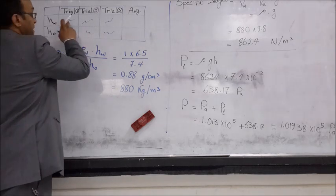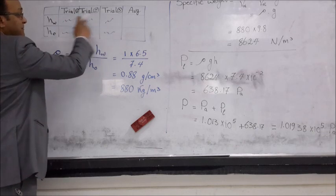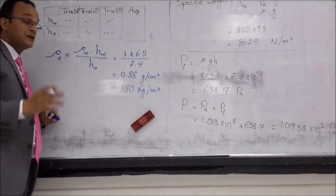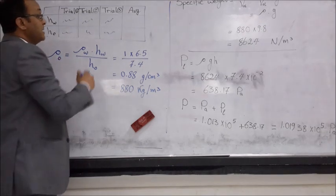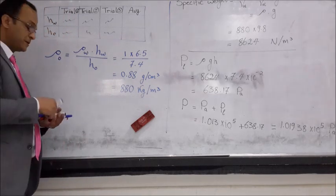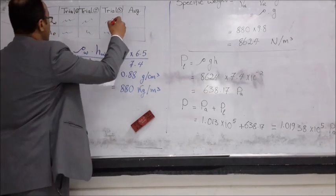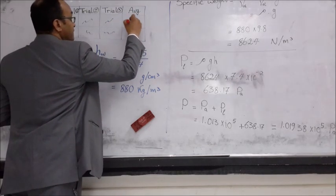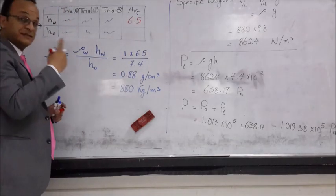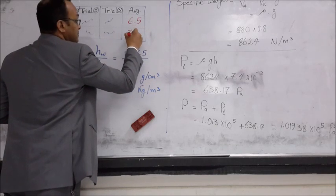We will get the average by calculating or finding the summation of these readings and divide by their numbers. Here are three trials so we will divide over three. Let's use the same values that we determined from our experiment. Let's say that the height of water is about 6.5 cm. For the oil which is greater because it's less dense, it will be 7.4.